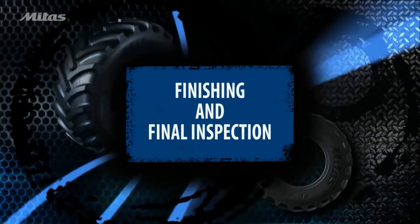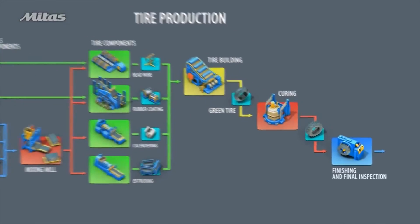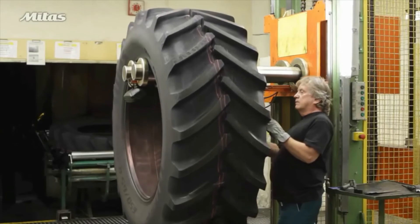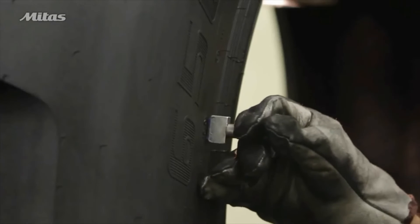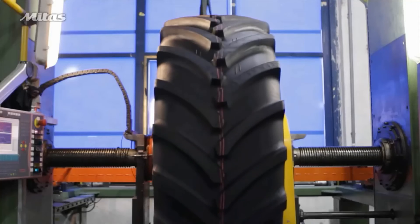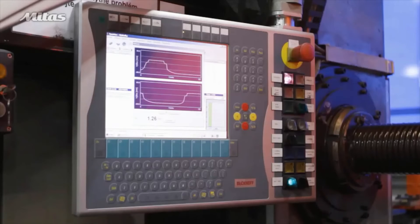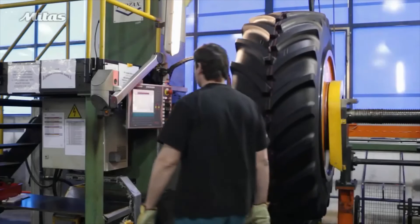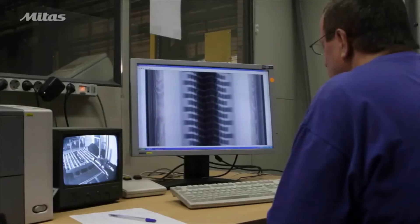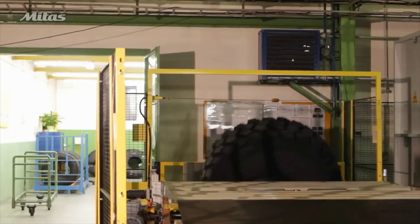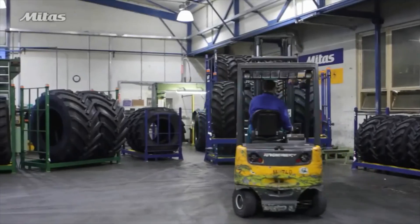Before the tyre is dispatched from the plant, it is trimmed and inspected. Each tyre is visually inspected for surface defects. Testing machines measure the compliance of radial and lateral run-out with norms, and all tyres undergo a uniformity test. Tyres containing steel cords are inspected by X-ray for internal defects. The final inspection is the last stage of tyre production, after which the tyre is stored and ready to be dispatched to customers.